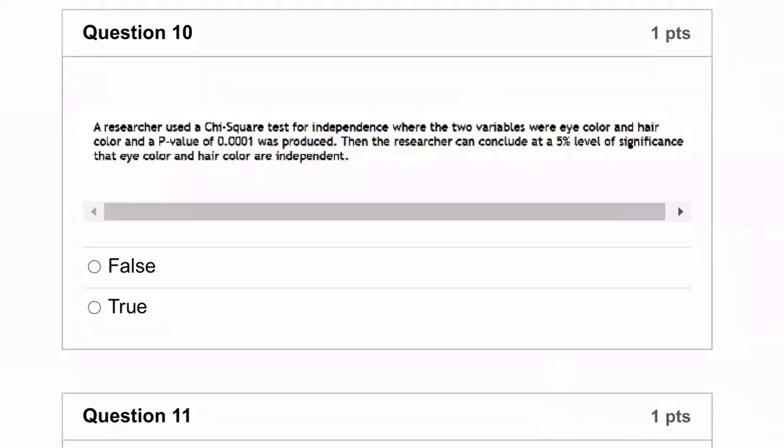Okay, on this one, it says a researcher used a chi-square test for independence where the two variables were eye color and hair color, and a p-value of 0.0001 was produced. Then the researcher concluded at the 0.05 level that the eye color and hair color are independent. Is that true or is that false? Well, to answer that question, we've got to go look at the test for independence in the notes.